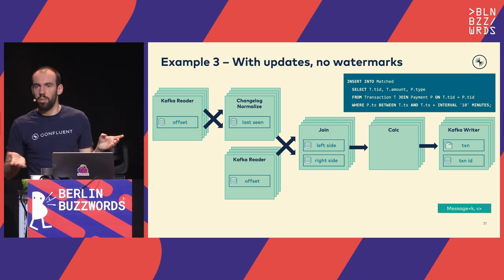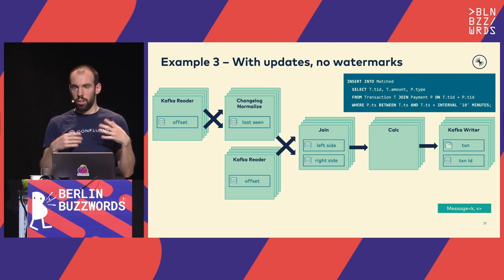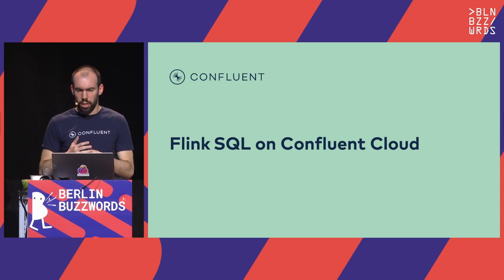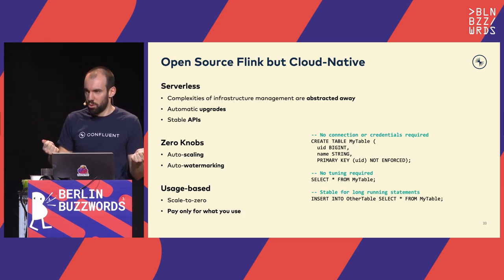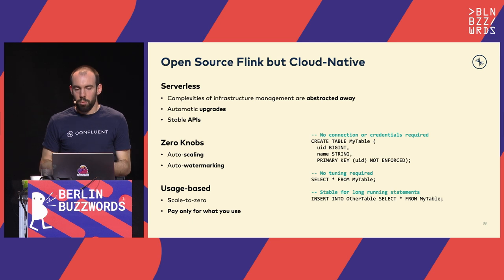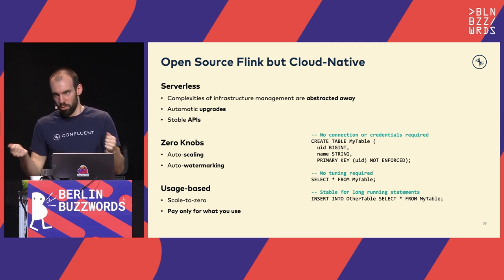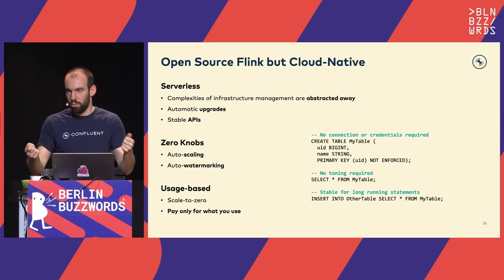Let me quickly talk about where Flink is used. At Confluent, we have Flink SQL on Confluent Cloud. As a user, it's open source Flink as you know it, just with a lot abstracted away — a serverless experience, automatic upgrades, and stable APIs. We have auto-scaling mechanisms so you don't have to configure a lot, and auto-watermarking so you don't fully need to understand what watermarks are. It's all usage-based: if you don't use it, it scales to zero, and you only pay for what you use.